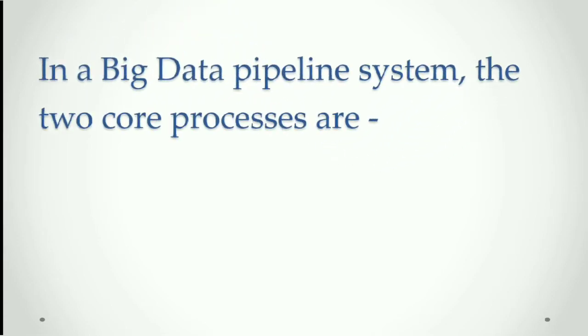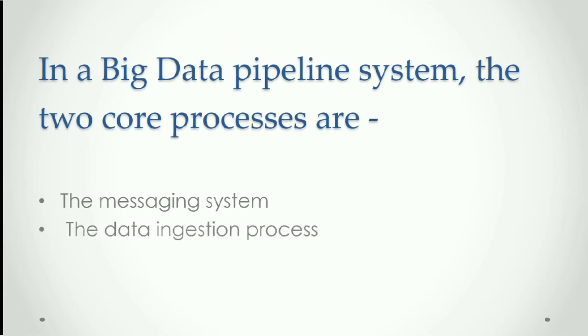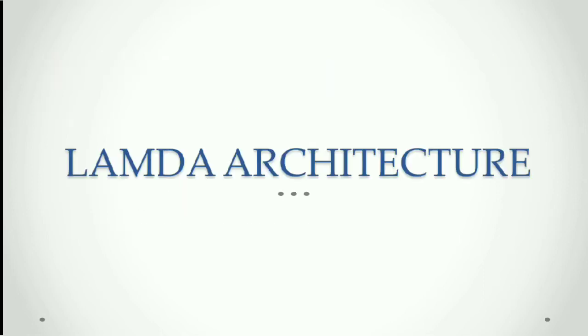In a big data pipeline system, the core processes are the messaging system and the data ingestion process. The messaging system is the entry point in a big data pipeline. Apache Kafka is a publish-subscribe messaging system that works as an input system. For messaging, Apache Kafka provides two mechanisms utilizing its API: producer and subscriber. Once the data is available in a messaging system, it needs to be ingested and processed in a real-time manner.